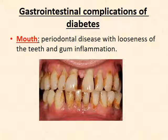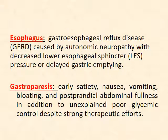Gastrointestinal complications of diabetes: in the mouth, periodontal disease causes loss of teeth and gum inflammation. Esophageal complications include GERD — gastroesophageal reflux disease — due to decreased lower esophageal sphincter pressure, or delayed gastric emptying.